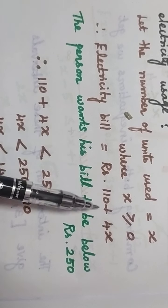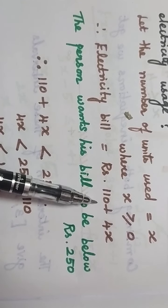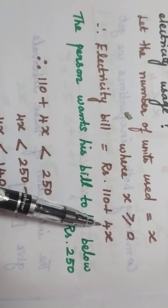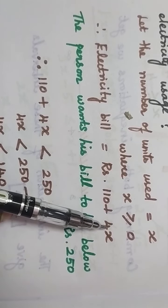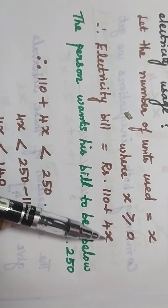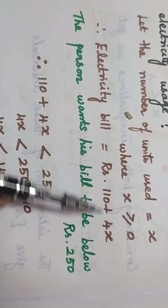The electricity bill will be 110 rupees as the basic charge, plus 4 into x. 4 into x means for each unit we charge 4 rupees. So the number of units multiplied with rupees 4. So the electricity bill is 110 plus 4x.